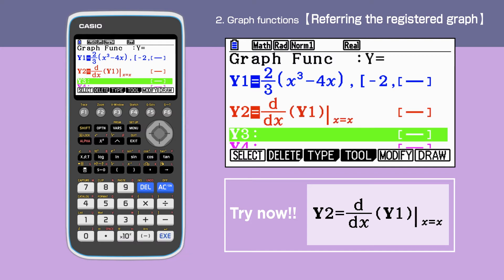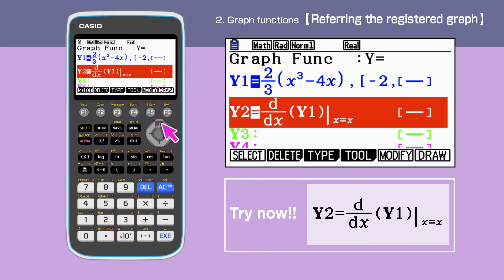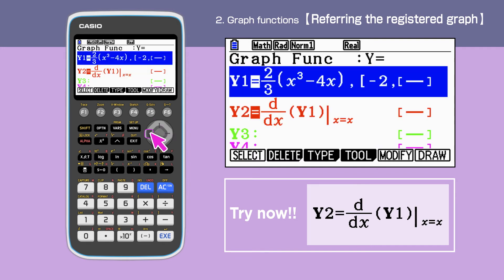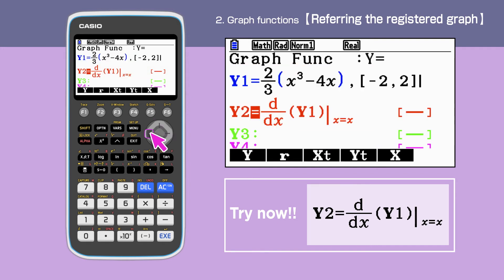We are not able to set the domain of the original function y1 if this function is used as a substitute in y2. Therefore, in this case, we will need to delete the domain of y1. We delete the domain by highlighting y1, move the cursor at the end of the equation and delete.